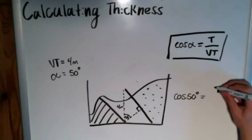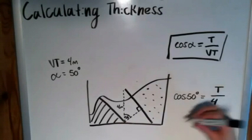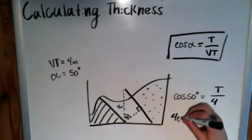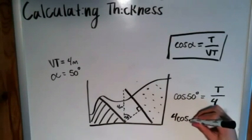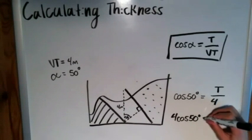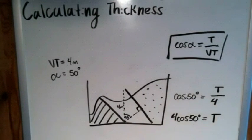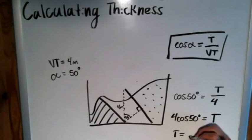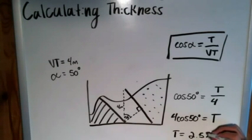So we know that the vertical thickness is four meters, we know that this angle is 50 degrees. Now we'll just plug it into the equation. The cosine of 50 degrees is equal to the thickness divided by four, so four times the cosine of 50 degrees is equal to the thickness. So with that we get that the thickness is equal to 2.57 meters.